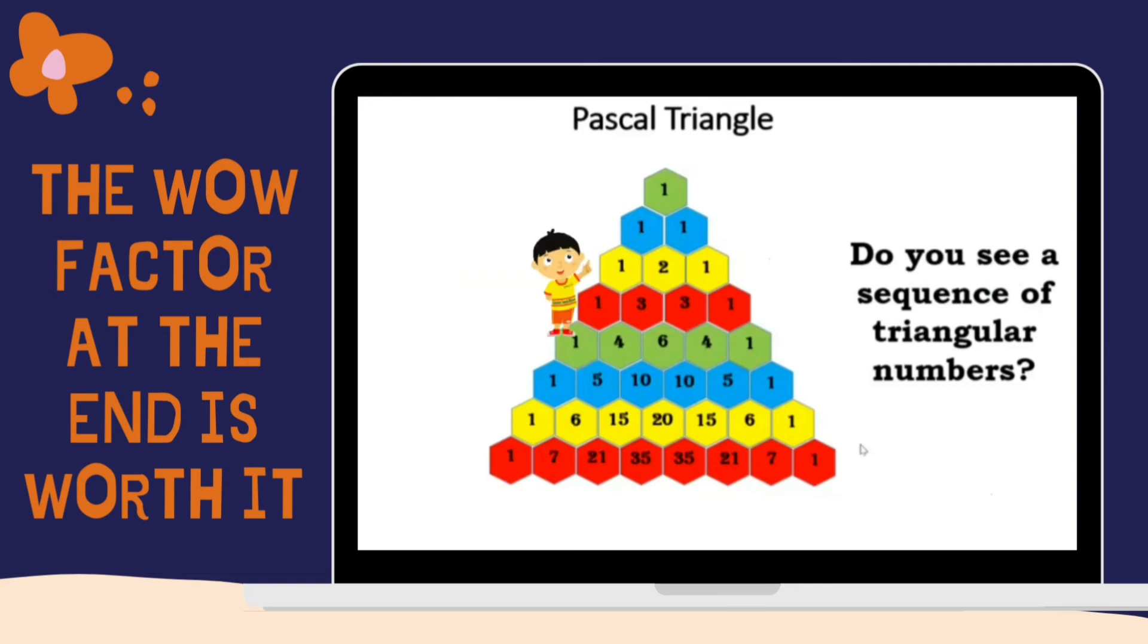Is that in the third row, there's two plus one equals three? There's one plus two plus one, we get four. Okay. Oh.